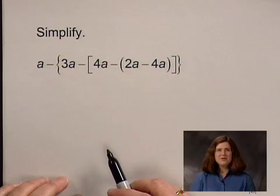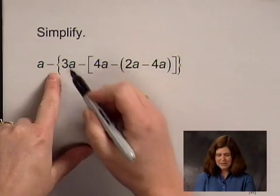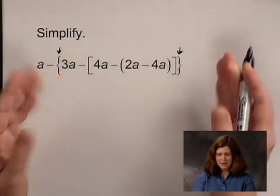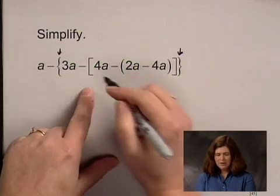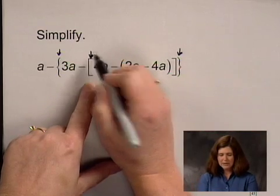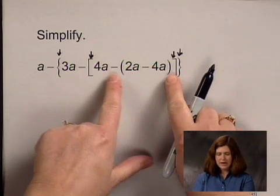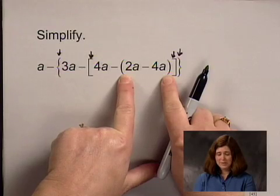Now, the way to find the innermost set of grouping symbols is to notice that these braces, the left one is here, the right one is here, they're on the outside of the expression. When we move in, we see that these brackets, the left one is here, the right one is here, that's still outside the parentheses. So the parentheses in here would be the innermost set of grouping symbols.